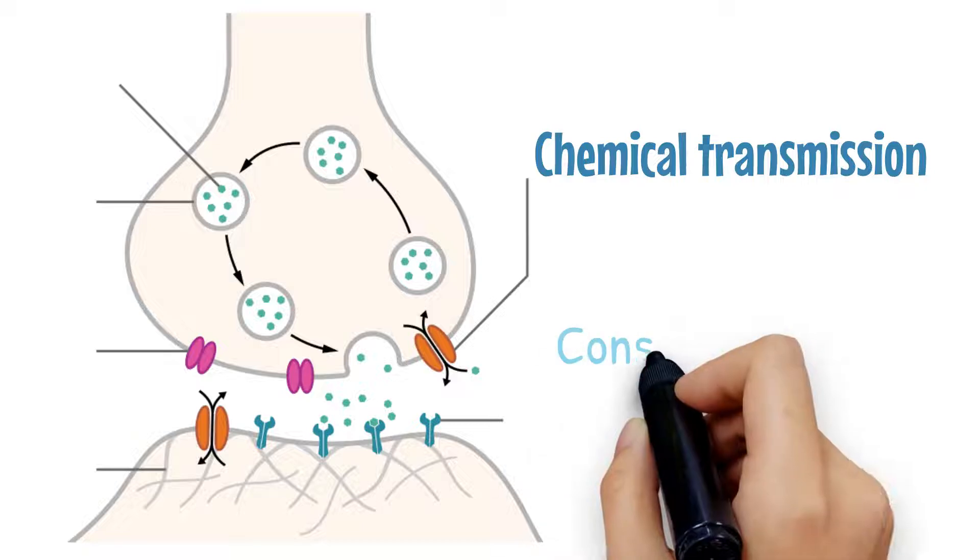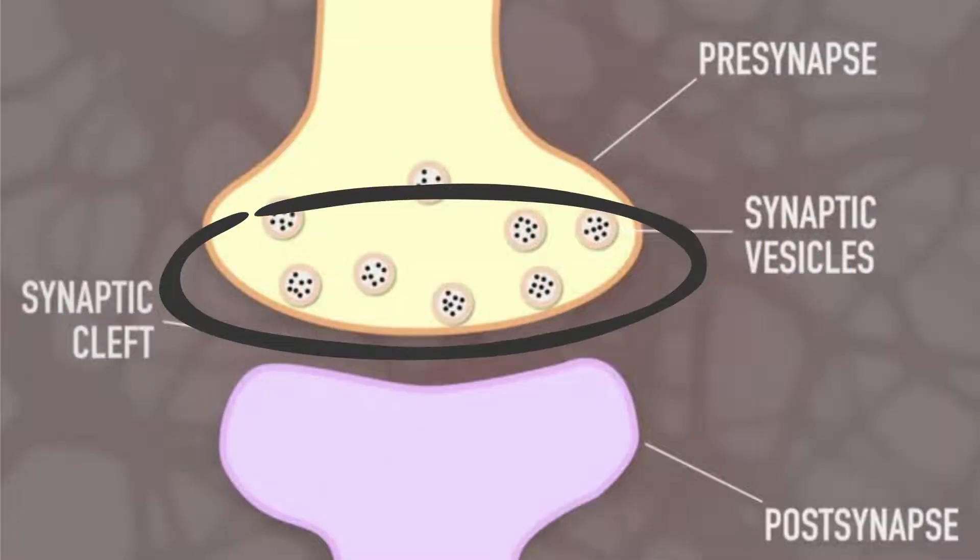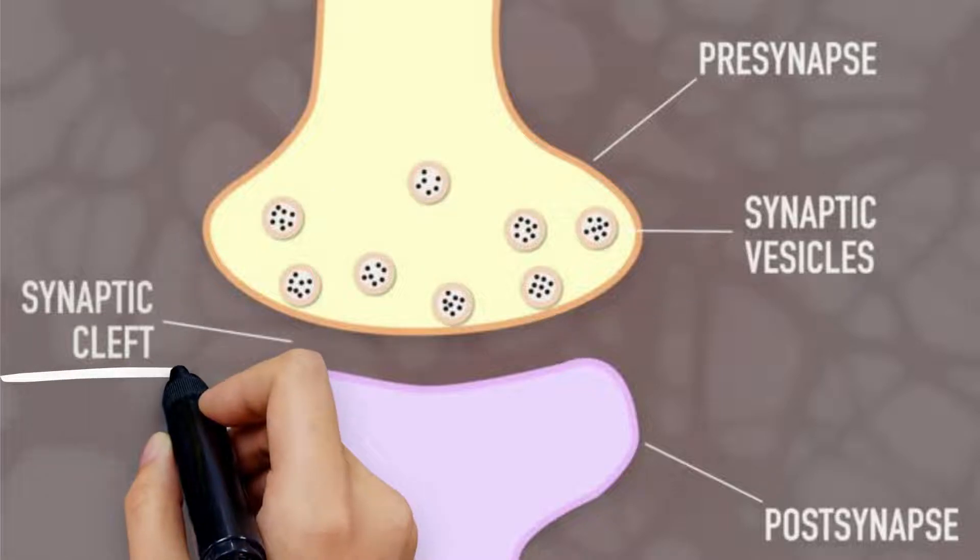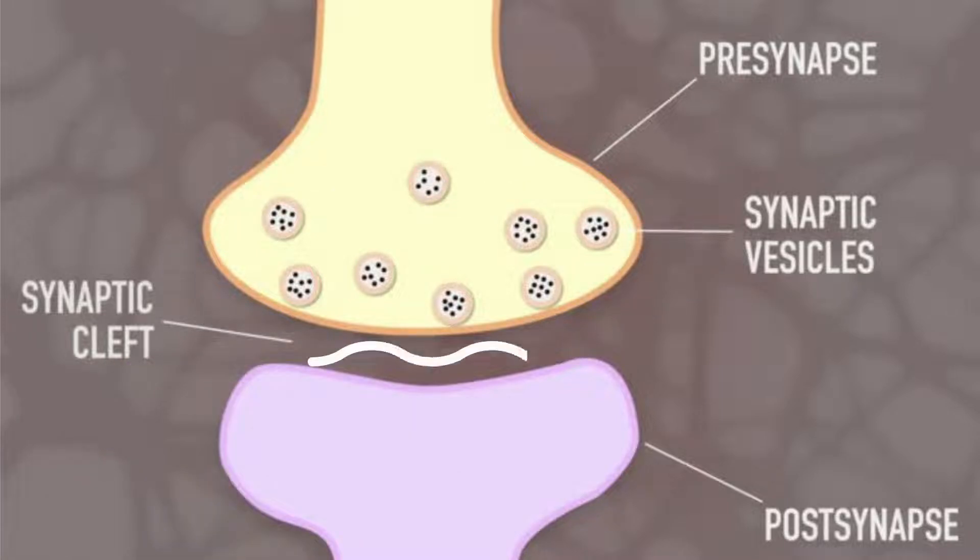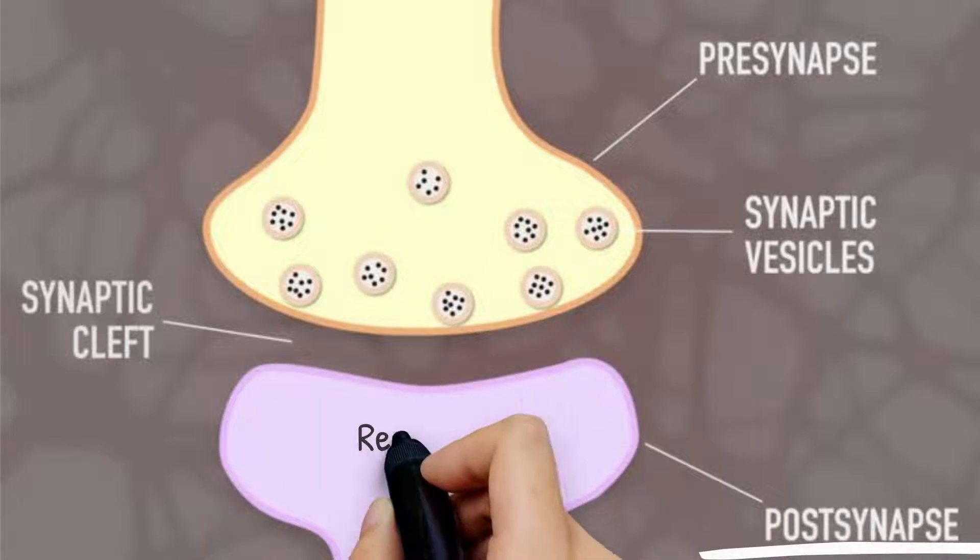A chemical synapse consists of three parts. Pre-synaptic endings contain neurotransmitters or chemical messengers, synaptic clefts are the gap between the two neurons, and post-synaptic endings contain sites for receptors that receive the signals.